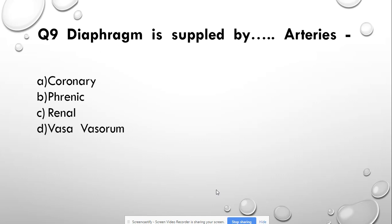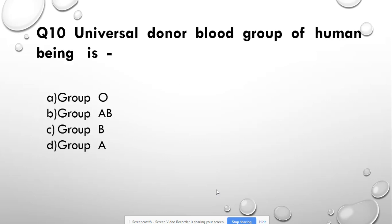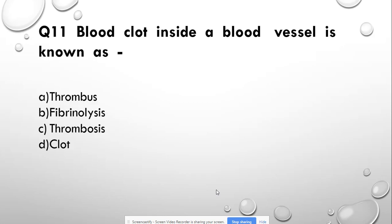Question number 9: The diaphragm is supplied by which arteries? Options: coronary, renal, phrenic, and vasosporum. Answer: phrenic. Question number 10: The universal donor blood group is — group O, group AB, group B, or group A. Answer: group O. Question number 11: The blood clot inside the blood vessel is known as — fibrinolysis, thrombosis, thrombus, or clot. Answer: thrombus.